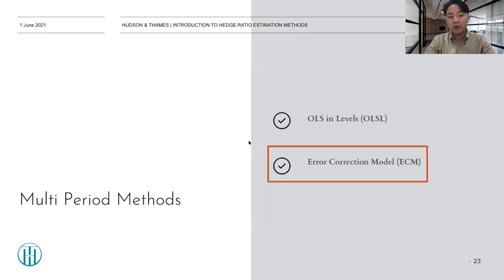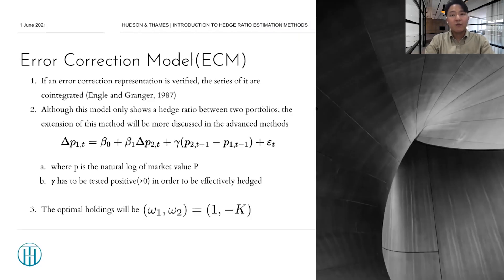Okay, so the last method and the second method from the multi-period method is ECM. If an error correction representation is verified, the series of it are co-integrated by Engle and Granger, 1987. So although this model only shows a hedge ratio between two portfolios, the extension of this method will be more discussed in the advanced method later. So in the equation, here in the slide, p, small p, is the natural log of market value large P and gamma. Here, has to be tested positive in order to be effectively hedged. And the optimal holdings will be as follow, where k equals e to the beta zero divided by gamma.